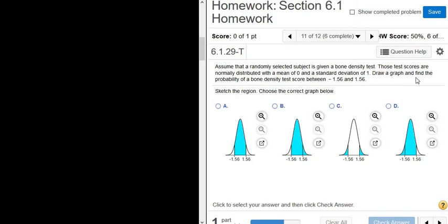This problem is about bone density scores. They're telling us the scores have a mean of 0 and a standard deviation of 1. Draw a graph and find the probability of a bone density score between negative 1.56 and 1.56.